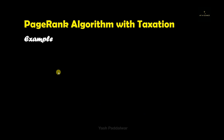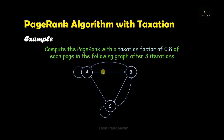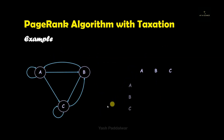Now let's work through an example. Compute the page rank with a taxation factor of 0.8 for each web page in the following graph after three iterations. So we need to perform three iterations, beta equals 0.8, and the given graph contains three nodes where each node is connected to every other node.